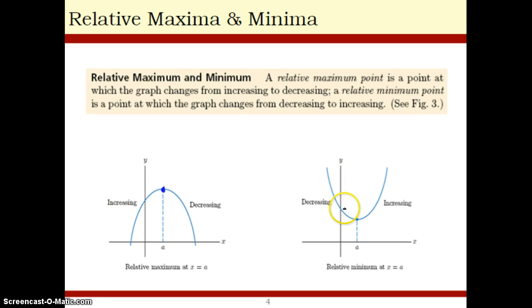Same thing, a relative or local minimum is where a function goes from decreasing to increasing. It's a low point on a graph. Also remember, in this case, this graph has no minimum. This graph has no maximum.